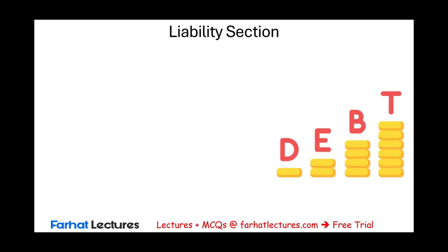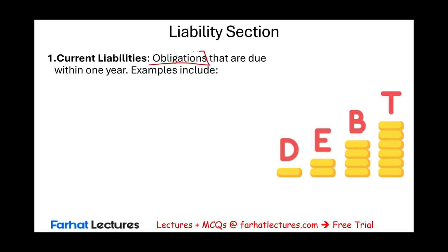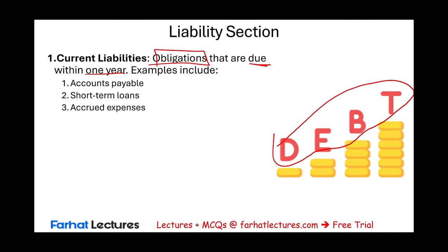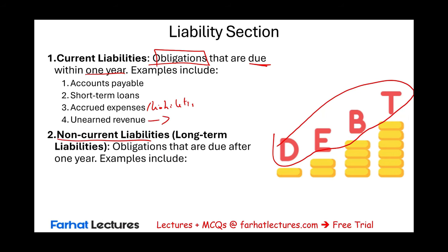The liability section is straightforward — two sections: current and non-current. Current liabilities are any obligations due within one year. Examples include accounts payable, short-term loans, accrued expenses (expenses you owe that are due within one year), and unearned revenues. Most unearned revenues are due within one year when someone pays you upfront for services. It is possible, though not common, for unearned revenue to be a long-term liability under long-term projects.